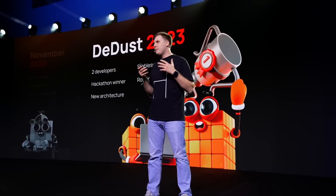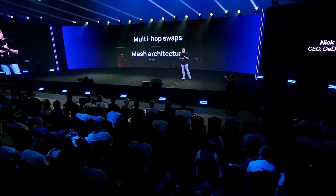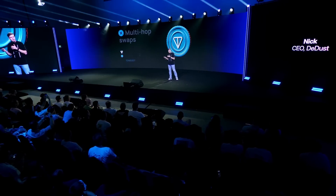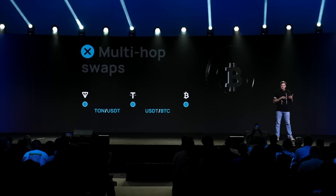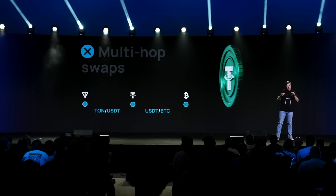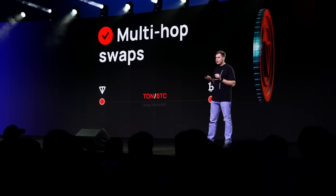But what actually made it game-changing? Two things: multi-hop swaps and mesh architecture. Let's talk about multi-hop swaps. Imagine you have two pairs: TON-USDT and USDT-BTC. You have TON but you want BTC. Without multi-hop swaps, it's a two-step process — you swap TON to USDT, and then after receiving USDT, you swap it to BTC. With multi-hop swaps, it's different. You send a single transaction to swap TON to BTC. Behind the scenes, it swaps TON to USDT and then to BTC, but absolutely automatically and much more efficiently. No hassle, no extra steps — just a simple and smooth user experience.